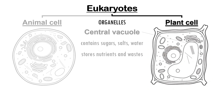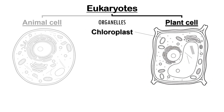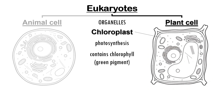Lastly, plant cells contain chloroplasts, the site of photosynthesis. Photosynthesis is the process by which plants use sunlight to produce sugars like glucose. To do this, chloroplasts contain a green pigment called chlorophyll, which absorbs light energy. And yes, it's this chlorophyll that gives plant leaves their green color.